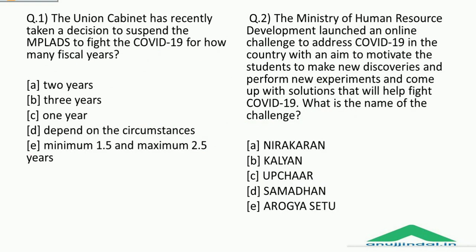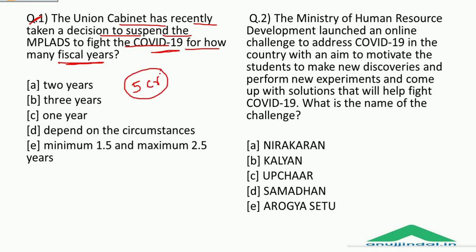Now for the Friday quiz. Question 1: The union cabinet has recently taken a decision to suspend the MP LADS to fight COVID-19 for how many fiscal years? Under MP LADS, 5 crore rupees is provided to each MP for welfare projects in their constituency. The union cabinet has taken a decision to suspend MP LADS for two years. The correct answer is Option A — two years.